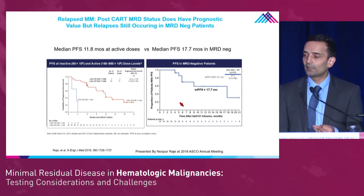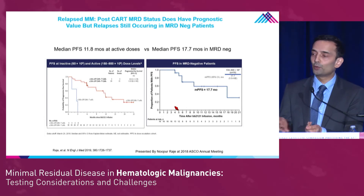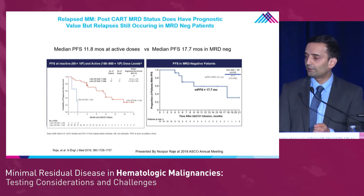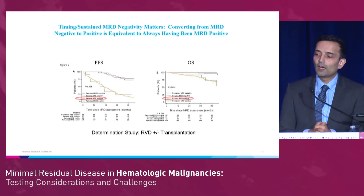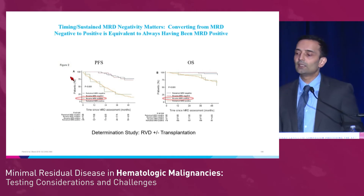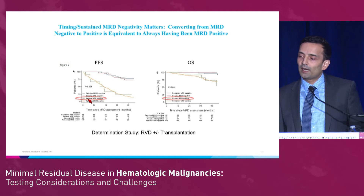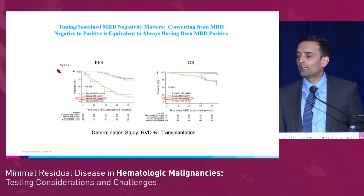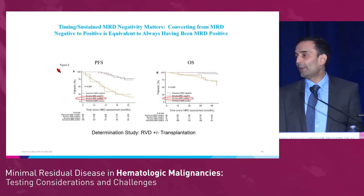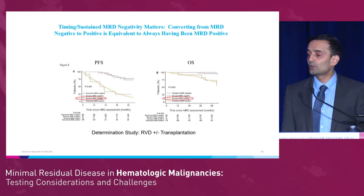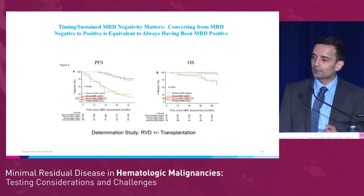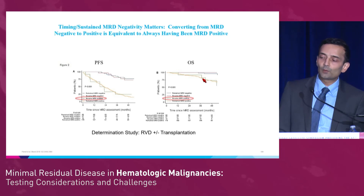One of the unusual things about CAR T is you can often have the marrow clear very quickly, but you still have paraproteins circulating in the blood, perhaps due to half-life issues. The timing and sustaining of MRD negativity matters. In this study, patients with MRD negativity did better, but those who had converted from MRD negative to positive actually did just as badly as those who were positive to begin with. So if you had a hemodilute specimen and thought it was MRD negative, then the next time it's positive — you may have acted on an inadequate sample.